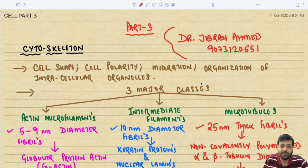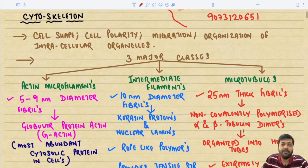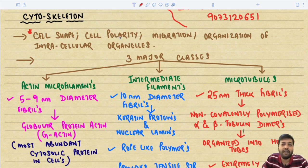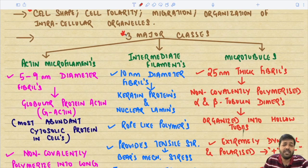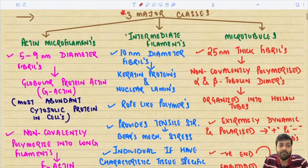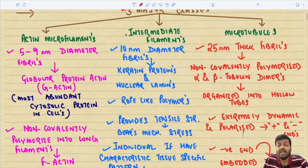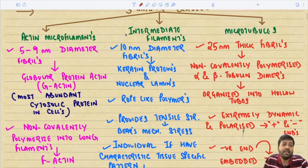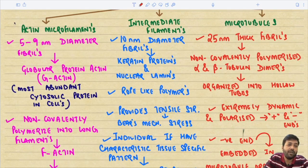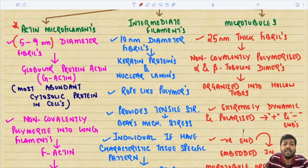The cytoskeleton is responsible for maintenance of cell shape, polarity, migration, and organization of intracellular organelles. There are three major classes: actin microfilaments, intermediate filaments, and microtubules. Actin microfilaments are 5–9 nanometer diameter fibrils composed of the globular protein actin, called G-actin.